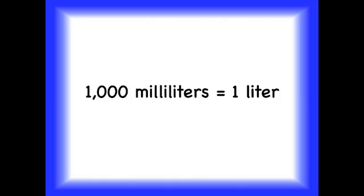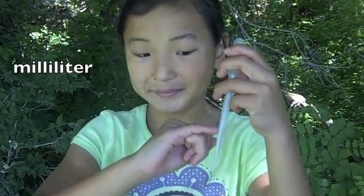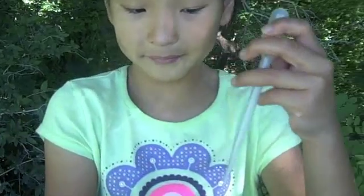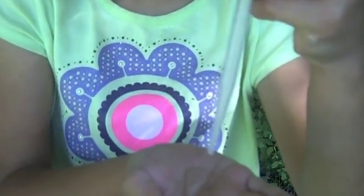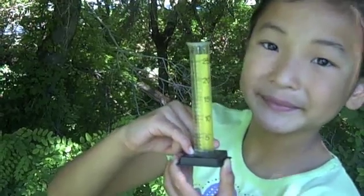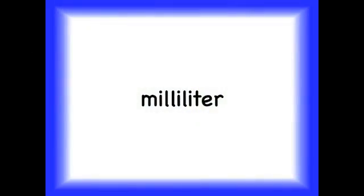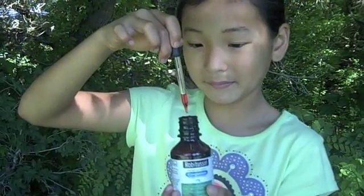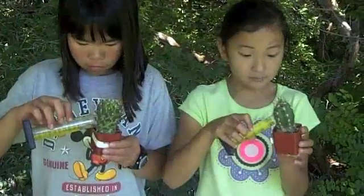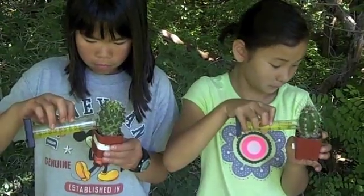So, 1,000 milliliters equals one liter. A milliliter is the amount of water a pipette holds up to the one milliliter line — about this much water. This graduated cylinder also measures milliliters. A milliliter is a very small unit of capacity. It is useful for measuring things like cough medicine or how much water you need to give a cactus each week.